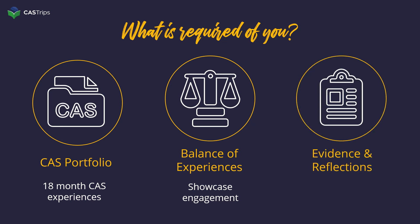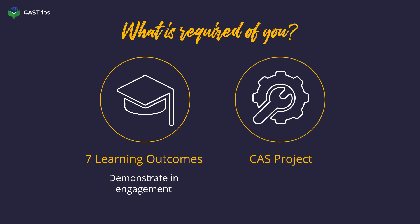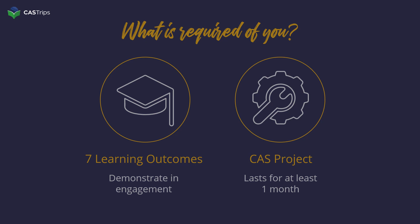Next are your evidence and reflections. You will need to provide evidence of your engagement in CAS experiences and reflections about each of them. And don't forget the seven learning outcomes — by the end of your 18 months you will need to demonstrate engagement with each of the seven learning outcomes through CAS. And finally is your CAS project. You will need to participate in a collaborative CAS project that lasts for at least one month.